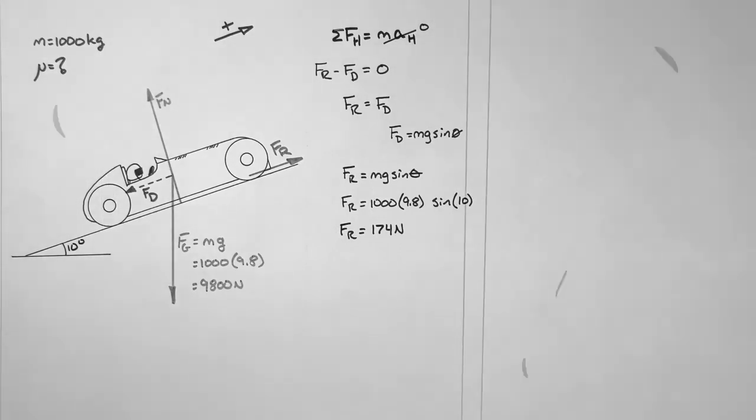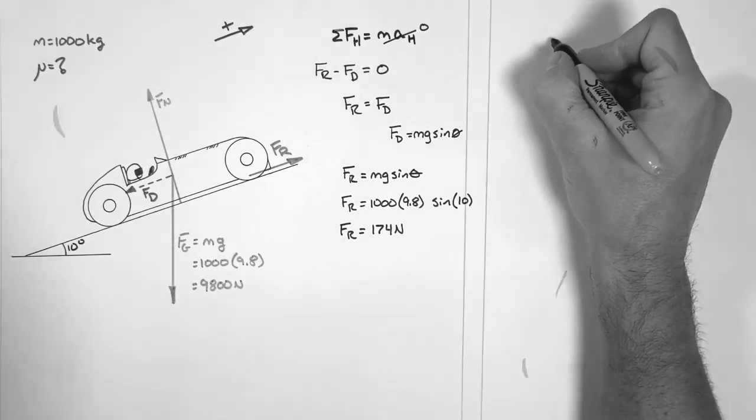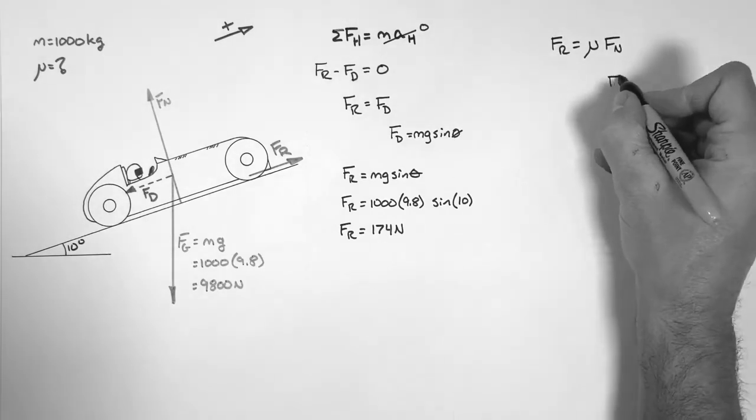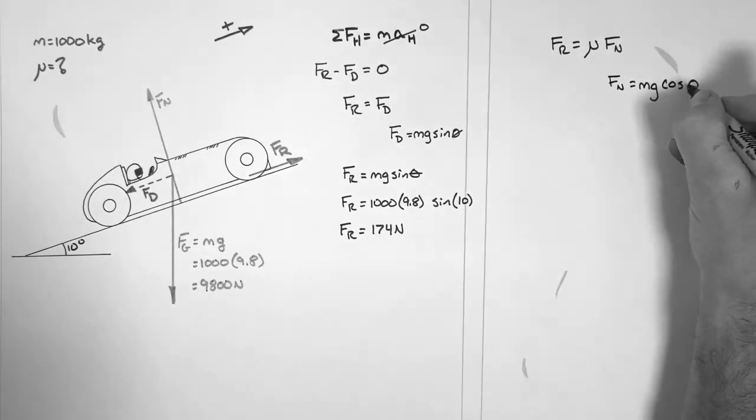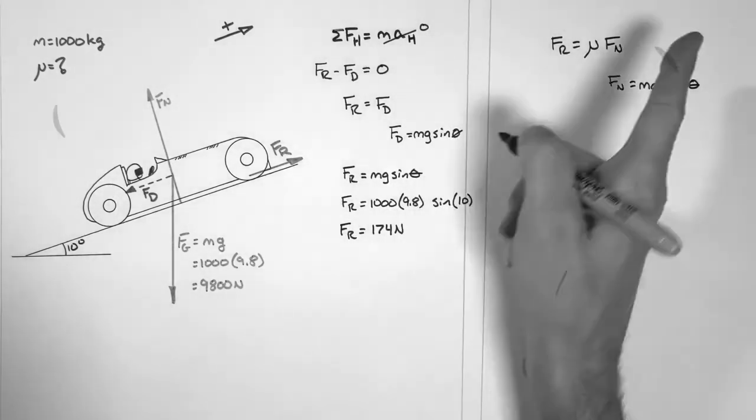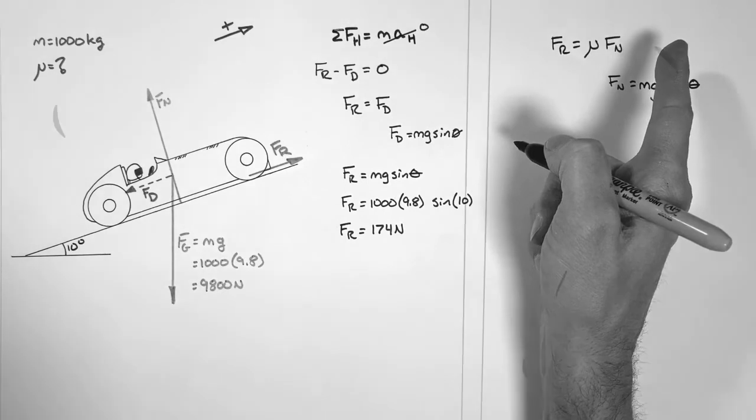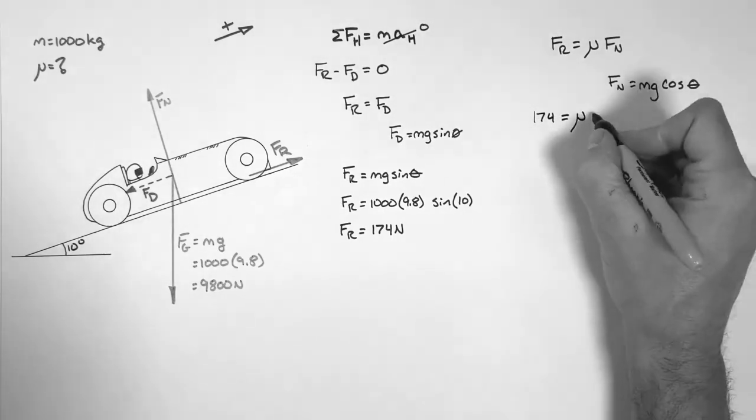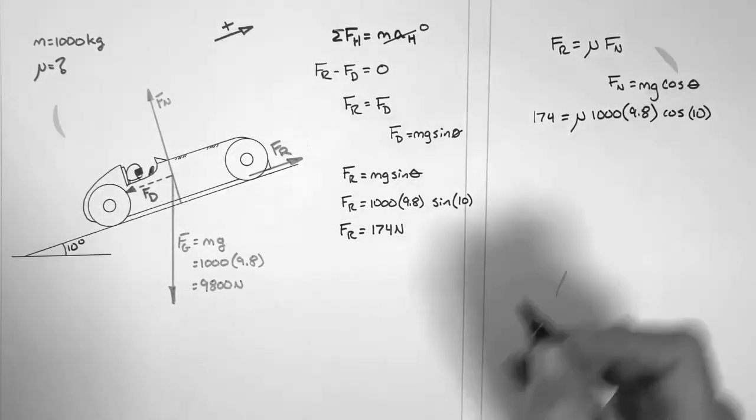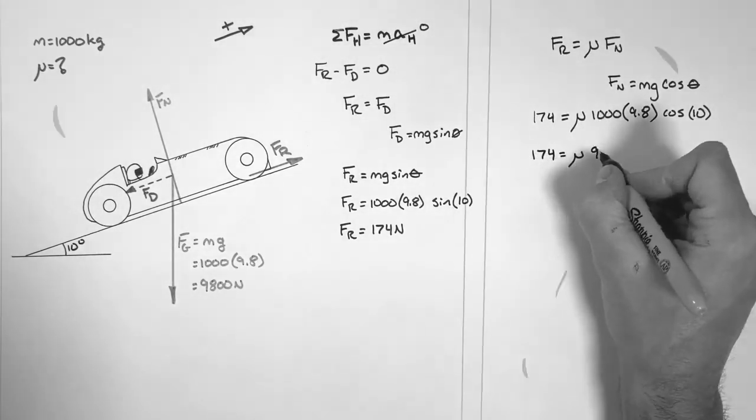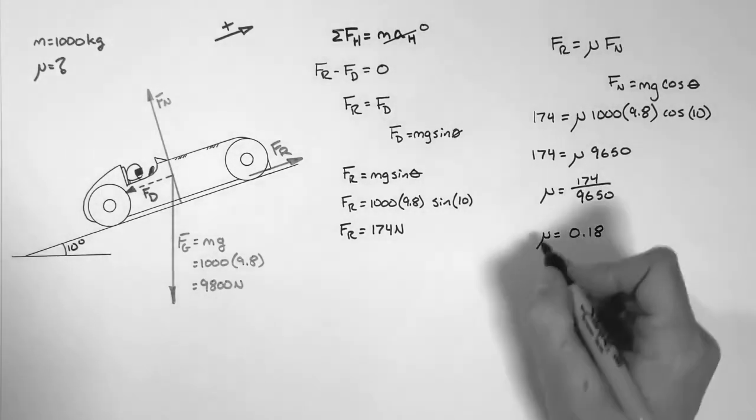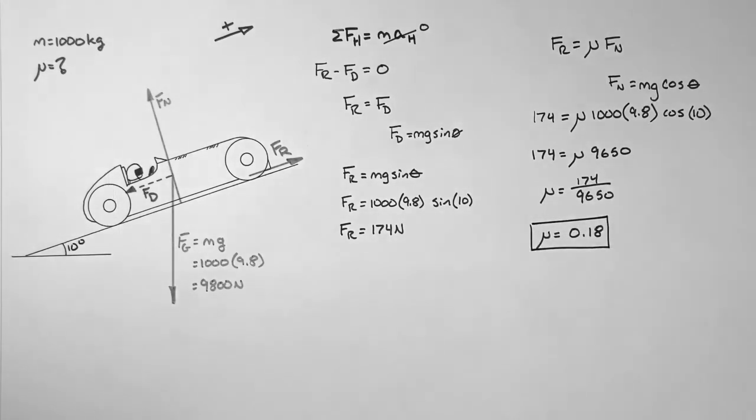Now remember, we're not looking for the magnitude of friction in this problem. We're looking for the coefficient of friction. So we're going to need to take a look at our friction equation. Now the normal force we need to solve for is using the equation mg cosine theta. If you want to see where that's derived, click in the upper right-hand corner. Being already solved for the magnitude of friction needed to drive the car up the hill, 174 newtons, we set that equal to mu Fn. Plugging in our values for Fn, we find that mu equals 0.18. Horace should be able to drive up this hill on anything other than an extremely snowy day.